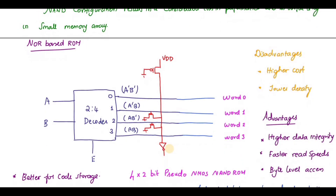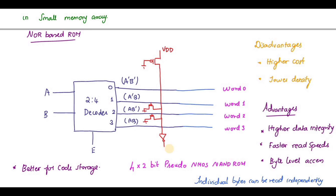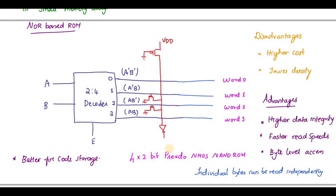Therefore we use NOR-based ROM. Its disadvantages are higher cost and lower density. The advantages of NOR-based ROM are higher data integrity, faster read speed, and byte-level access — individual bytes can be read independently. In the NOR structure, the two NMOS transistors are connected in parallel. This is pseudo-NMOS logic.